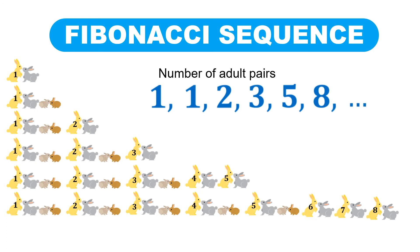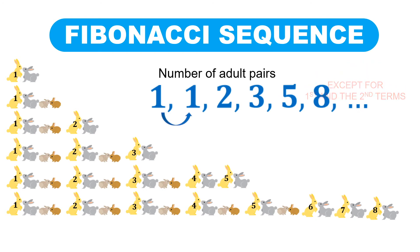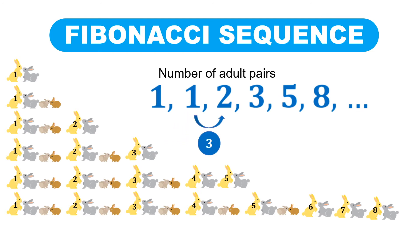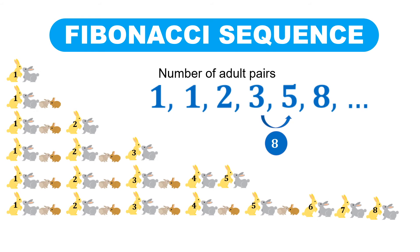It will be confusing to track the growing and giving birth of a growing number of rabbits, so let's use this initial data to find a pattern. Take a closer look at the terms of the pattern. Except for the first term and the second term, the other terms are simply the sum of the previous two terms. For instance, the third term, two, is one plus one. The fourth term, three, is one plus two. The fifth term, five, is two plus three. And the sixth term, eight, is three plus five.